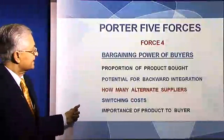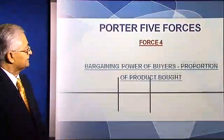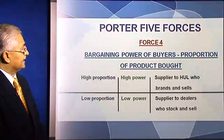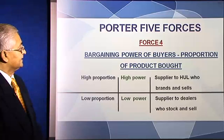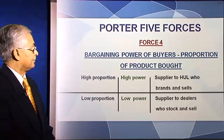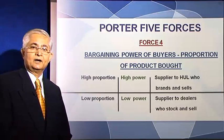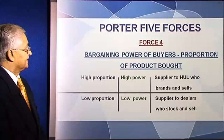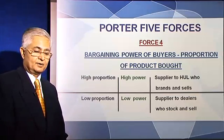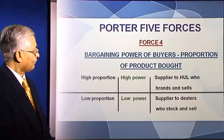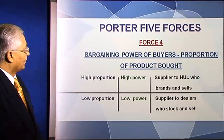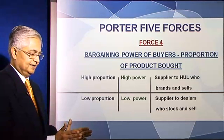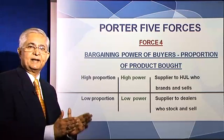Let's look at some of these points in a little more detail. Let's look at the proportion of product bought by a buyer and see how it affects the buying power — how it affects the bargaining power of that buyer. Take an instance where you have an industry which consists of suppliers to Hindustan Lever.